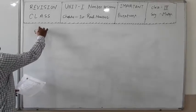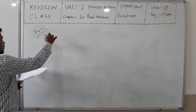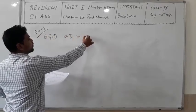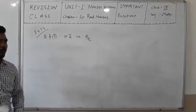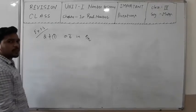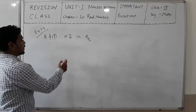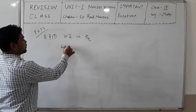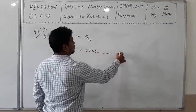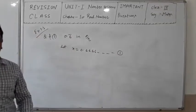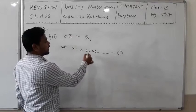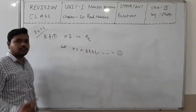Exercise 1.3, question number 3, first part: represent 0.6̄ in the form P/Q. We have to show that 0.6̄ equals P/Q. Let x = 0.6666... — that is equation 1. Since one digit is repeating, we multiply by 10. On multiplying by 10, we get 10x = 6.6666... — that is equation 2.